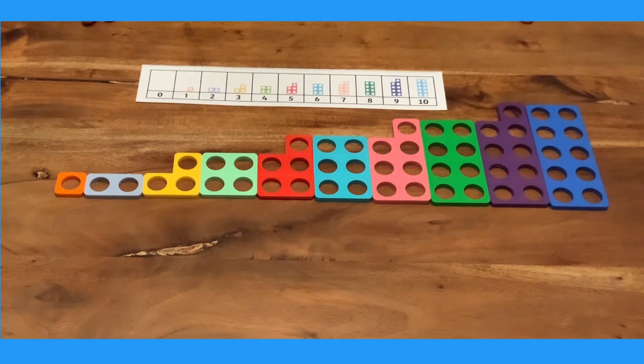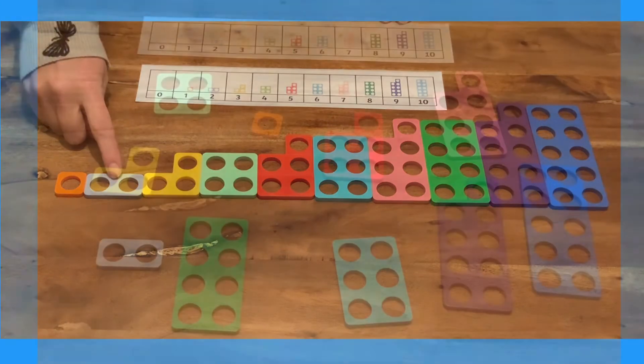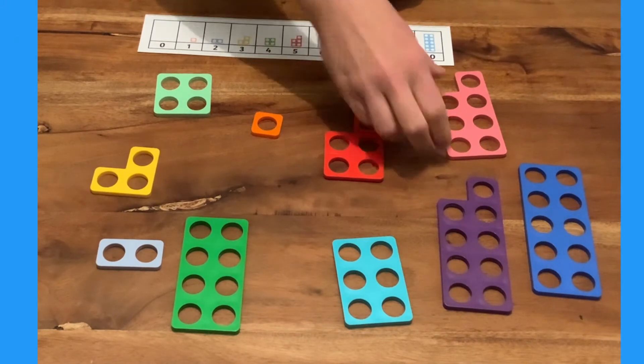You can ask children questions. What is one more than five? What is one less than ten? Which number comes between one and three? You could cover a number on the track. Can children find the missing number shape?